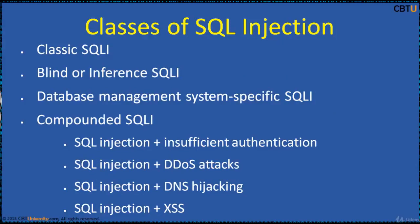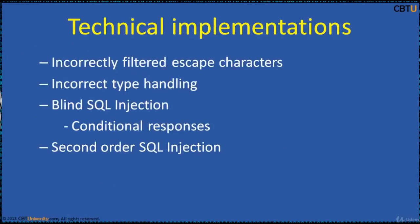Compound SQL injection is SQL injection combined with insufficient authentication, DDoS attacks, DNS hijacking, or cross-site scripting. Stormworm is also one representation of compound SQL injection. Technical implementations of SQL injection include incorrectly filtered escape characters, incorrect type handling, blind SQL injection, conditional responses, and second order SQL injection.